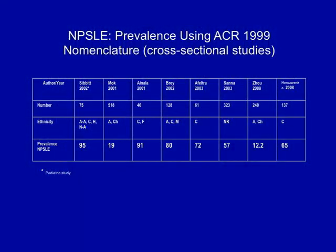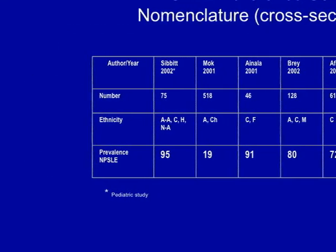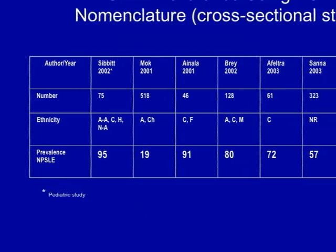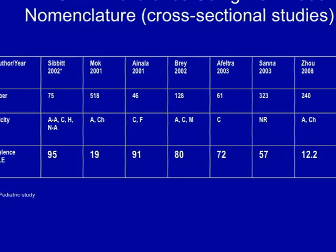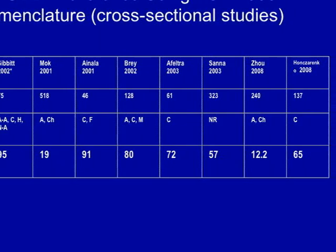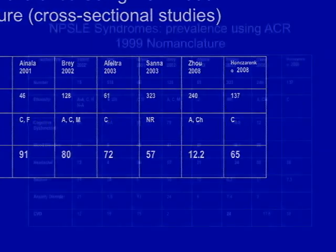Now we have this ACR framework — but has it improved our ability to identify neuropsychiatric syndromes? I've listed eight cross-sectional studies published since that time. The prevalence of neuropsychiatric syndromes across these studies ranges from 12.2 to 95 percent, with a lot in between — so that doesn't seem like a huge step in the right direction.